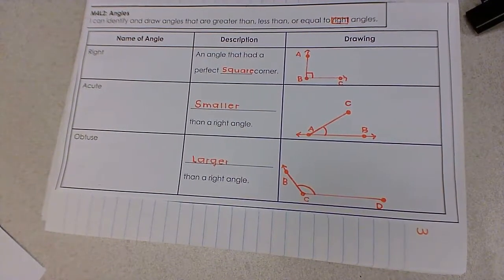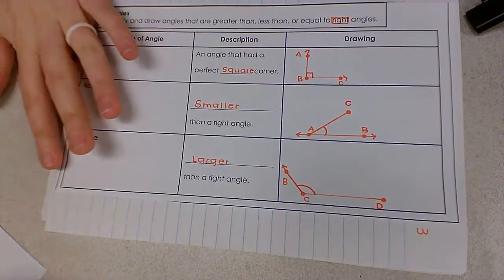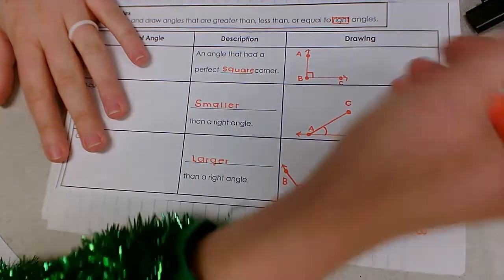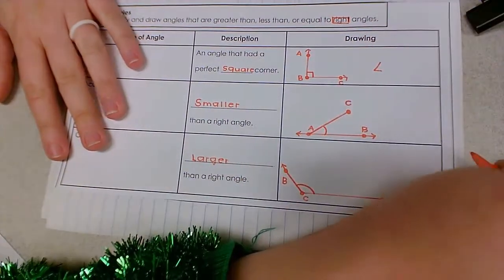Before we step away from this page, remember that we have a very specific way that we label our angles. So let's name these angles here. All three angles, even though they're different, will still start with a label of a crocodile mouth.